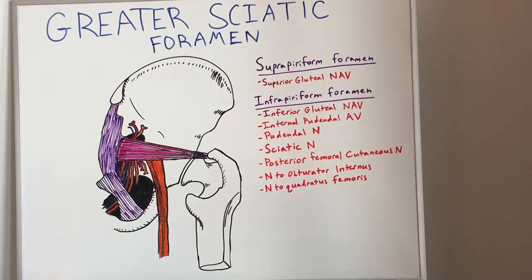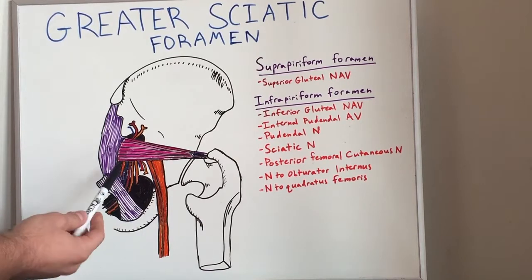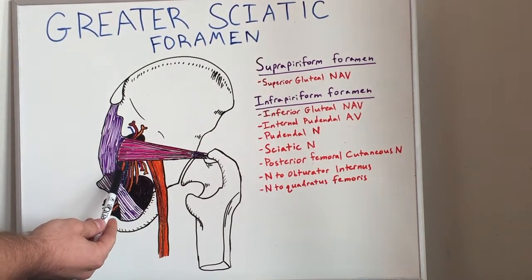Today's lecture is on the greater sciatic foramen. The greater sciatic foramen is an opening at the back of the human pelvis, which is created by the sacrotuberous ligament, seen here in purple, and the sacrospinous ligament, seen right here.